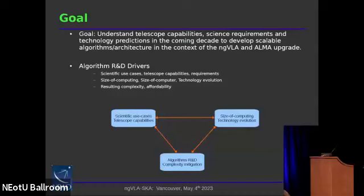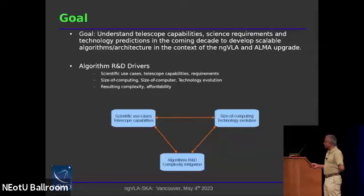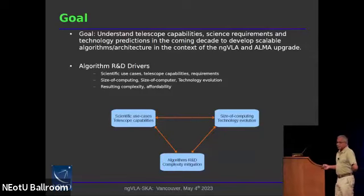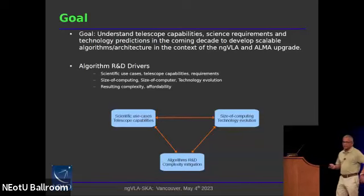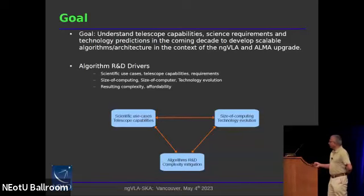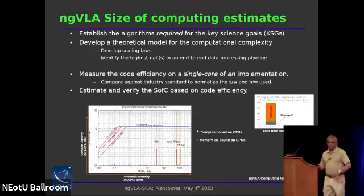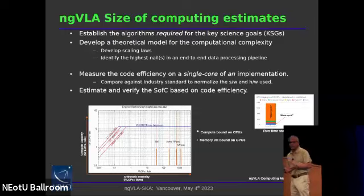To develop a roadmap for the kind of work that we do in our group, we have to navigate complex interactions between three pieces: scientific use cases, telescope capabilities, and algorithms required to deliver those science use cases, and the size of computing. The first thing we need to do is develop a model that will give us an estimate of the size of computing, specifically for ngVLA and ALMA.